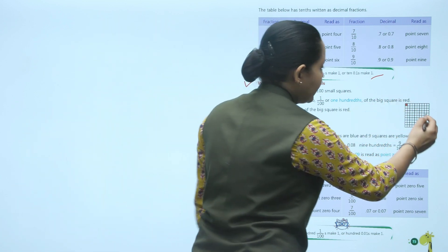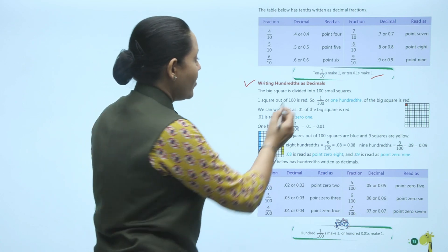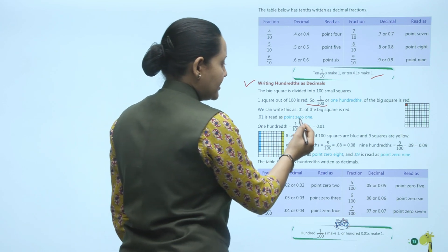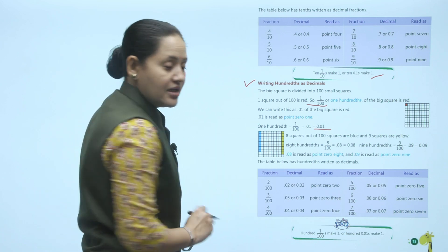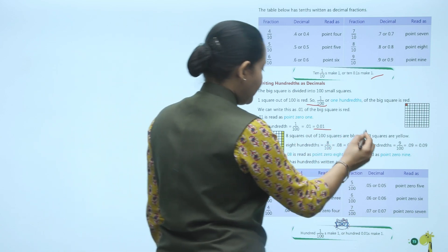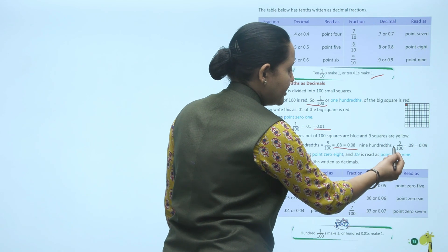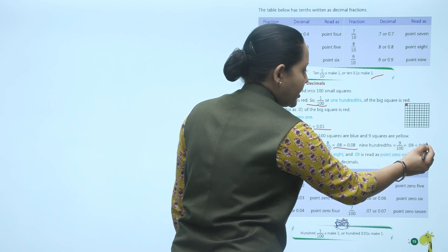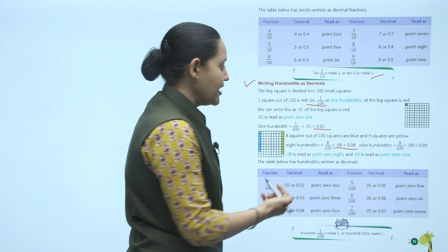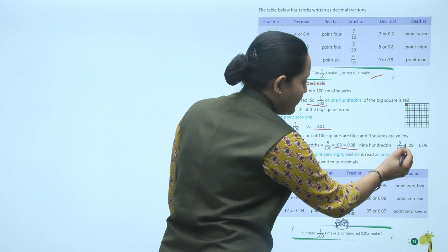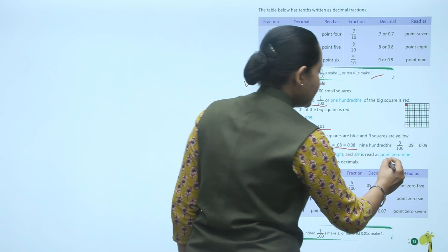From the right hand side, count two digits and then place the decimal. If there is only one digit, we add a zero, so 9 upon 100 becomes 0.09. 0.08 is read as 'point zero eight' and 0.09 is read as 'point zero nine.'